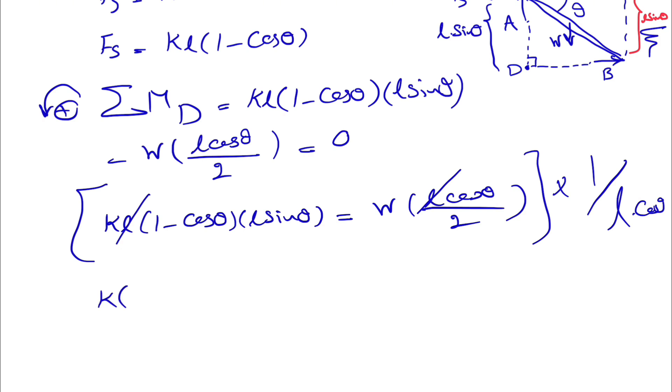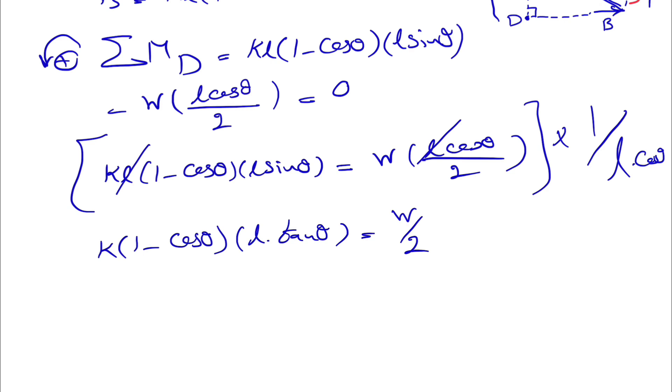We can divide each side by cosine of theta. If we do that on the left side, we get K times 1 minus cosine of theta. We have L sine of theta divided by cosine of theta, which will be tangent of theta. And this side will have W divided by 2. If we want to keep the theta on one side of the equation and the rest on the other side, we'll have 1 minus cosine of theta times tangent of theta equal to W over 2KL.